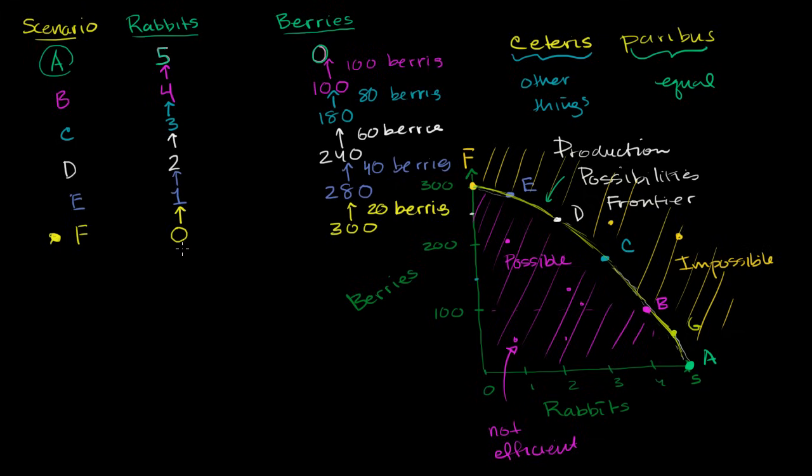And so you might see something interesting. The more rabbits that I'm going after, every time I try to go after another incremental rabbit, I'm giving up more and more berries. My opportunity cost is increasing. And so this phenomenon, it's not always the case, but it's the case in this example. Increasing opportunity cost. As we increase the number of rabbits we're going after.